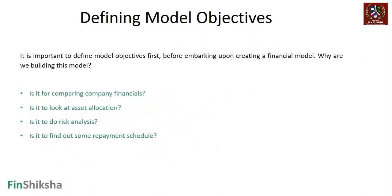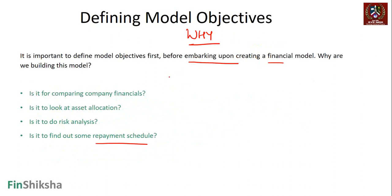Let's look at how we define the model objective before we embark upon creating a financial model. The question we have to answer is: why are we building this model? Is it for comparing company financials? Is it for looking at asset allocation? Is it to do some sort of risk analysis? Is it some sort of repayment schedule? Why is this 'why' necessary? Because it tells us what could be the requirements later on, which helps us create some sort of scalability.